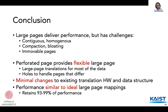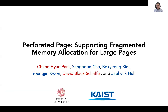To conclude: large pages offer performance, however it comes with challenges. We proposed perforated pages to overcome the challenges posed by large pages. Perforated pages provide large page translations for most of the perforated page, while hole pages provide 4KB page translation. Perforated pages reuse most of the existing TLB and page table, requiring minimal changes to existing hardware. We find that perforated pages can offer 93% to 99% performance of an ideal large page mapping. We invite you to read our paper to learn more. Thank you for your attention.